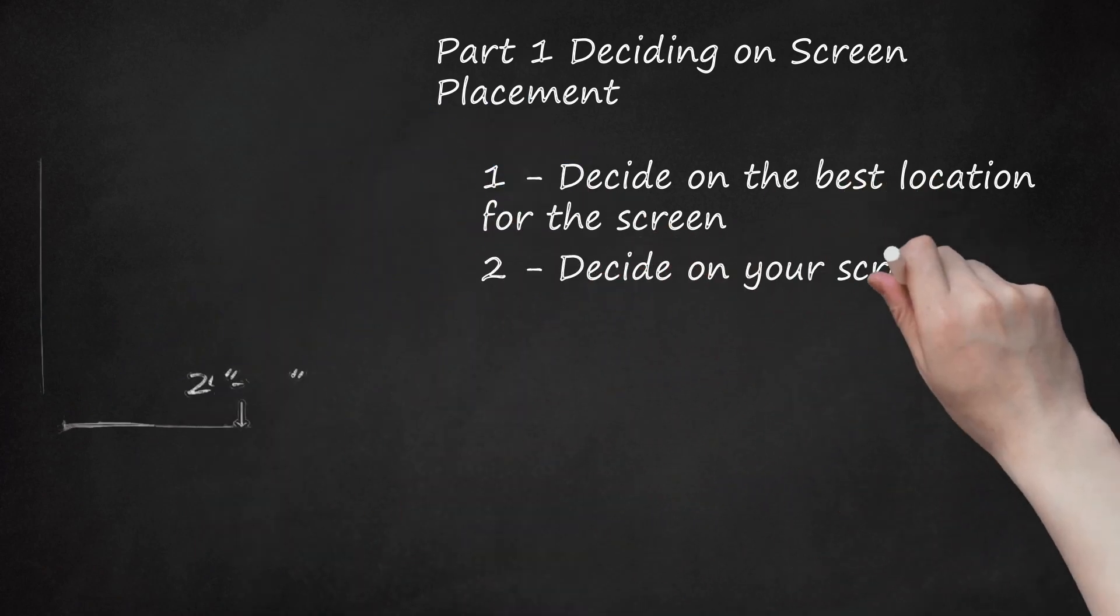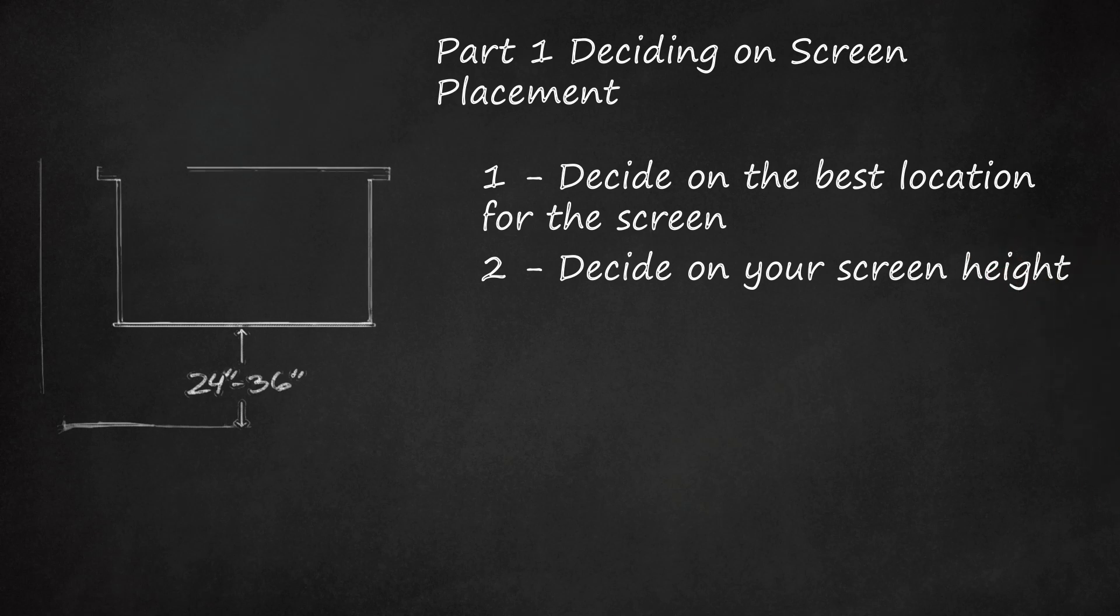2. Decide on your screen height. This will again depend upon the layout of your room. If you only have a couch and some chairs in the room, not theater-style seating in rows, an appropriate height would be between 24 and 36 inches (61 and 91.5 centimeters) off the floor.